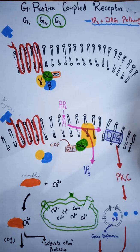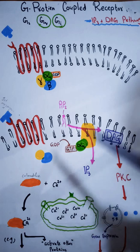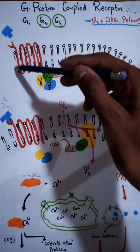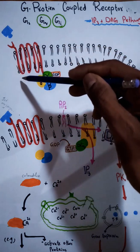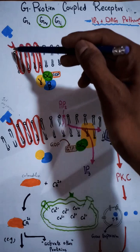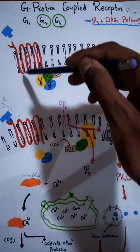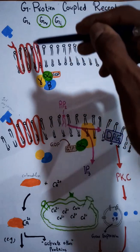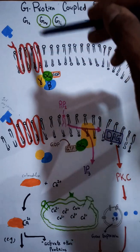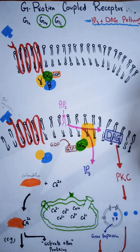This G protein coupled receptor is also called a 7-pass transmembrane receptor because this receptor passes through the cell membrane 7 times — 1, 2, 3, 4, 5, 6, and 7. It passes 7 times, so this is why it is called a 7-pass transmembrane receptor.